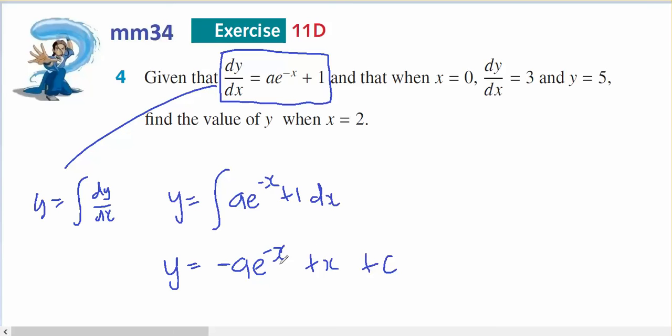So I've got two unknowns, I've got an a and I've got a c. So I need two pieces of information to solve that. And that's what I've actually got over here. When x equals 0, dy dx equals 3 and y equals 5.